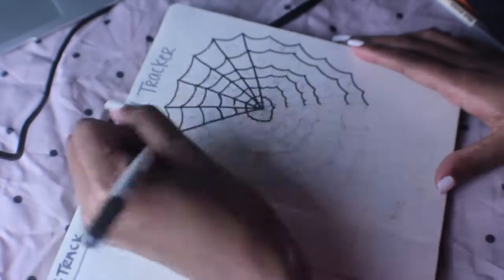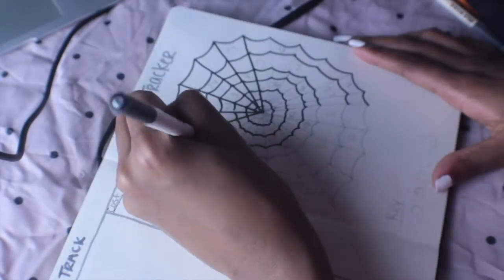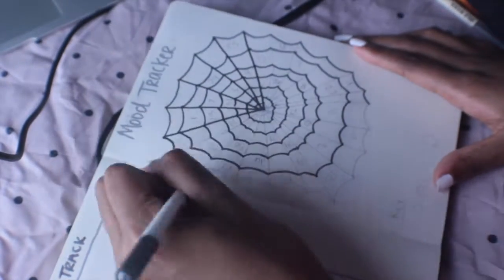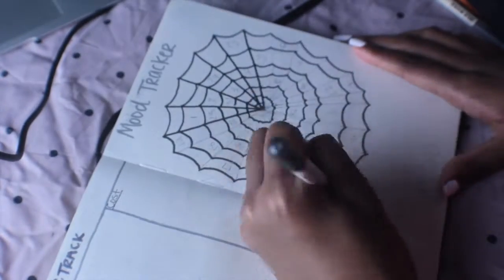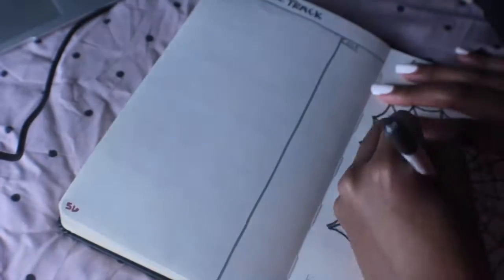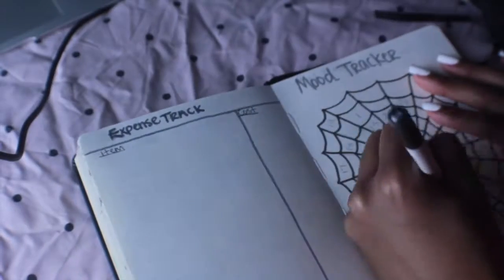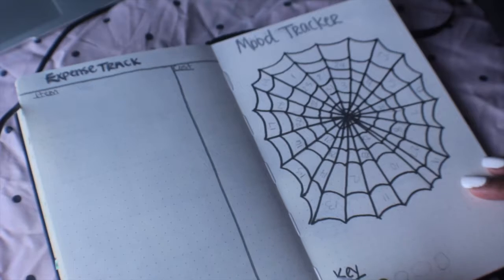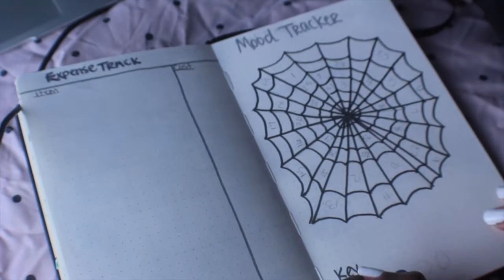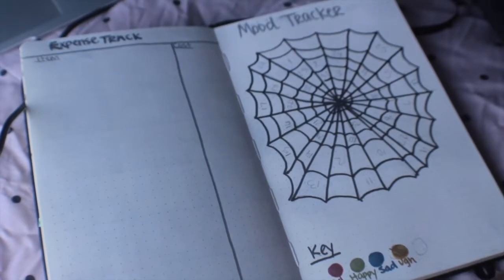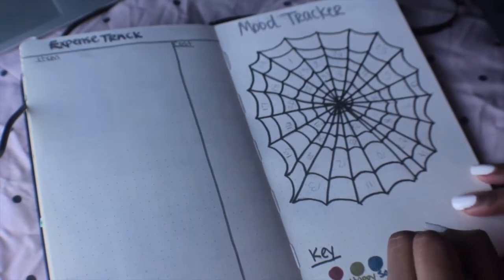My mood tracker - I decided to keep up with the spider web theme. This took a long time. There's more than 31 little sections on the inside of the spider web, but I decided to just space them out and put the days of the month throughout the spider web. However I'm feeling for that day, I'm going to use the marker for that color as you can see in my key.